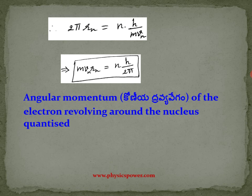According to Bohr theory, the electron revolves only in certain allowed orbits. This was stated as a postulate by Bohr. Now, De Broglie has mathematically derived and indirectly supported Bohr's theory.